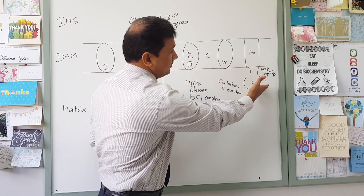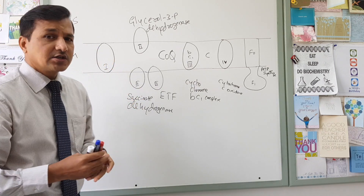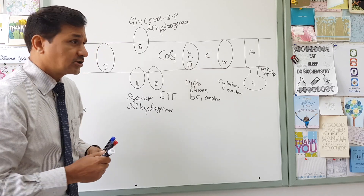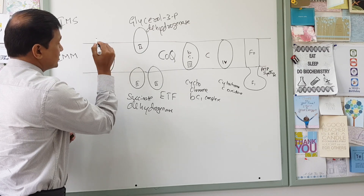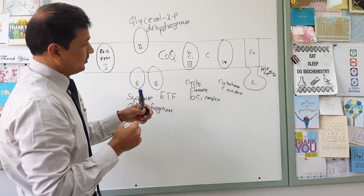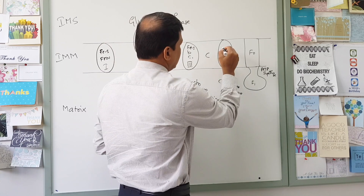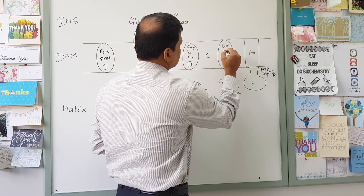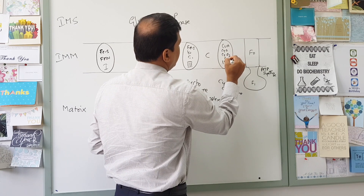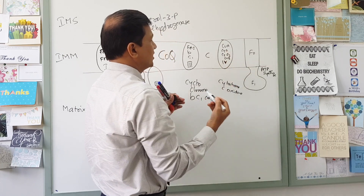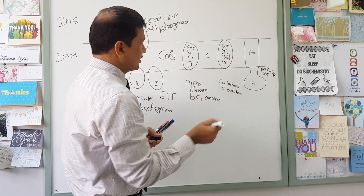ATP synthase is Complex 5 in the electron transport chain. Regarding other constituents: Complex 1 contains FMN and iron-sulfur clusters. The BC1 complex also has iron-sulfur (FeS) clusters. Cytochrome C oxidase contains copper A, cytochrome A, cytochrome A3, and copper B. So copper A, copper B, cytochrome A, and A3 are present in Complex 4.